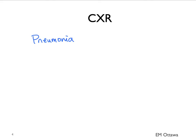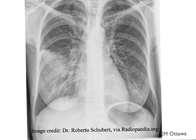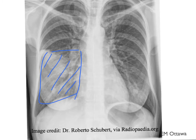First, chest X-ray. What other diagnoses can present that looks like PE? With shortness of breath and pleuritic chest pain, patients could be having pneumonia, pleural effusion, pneumothorax, or congestive heart failure. These diagnoses should show abnormal chest X-ray findings. This is a patient with an infiltrate in the right side of the lung — this is likely pneumonia. Similarly, we want to look for changes suggestive of CHF, pleural effusion, and pneumothorax on the chest X-ray.